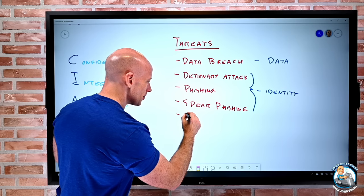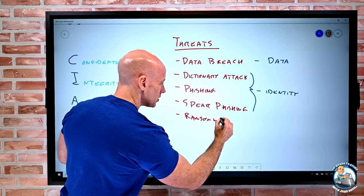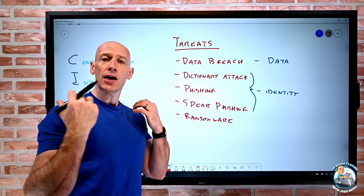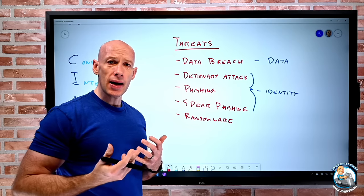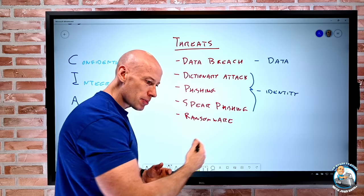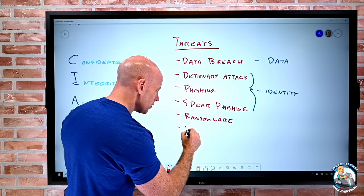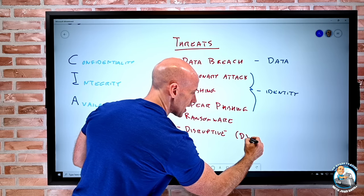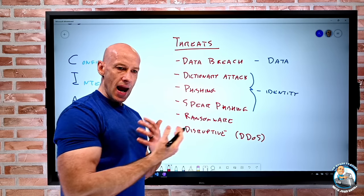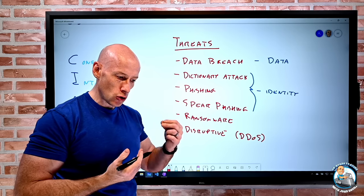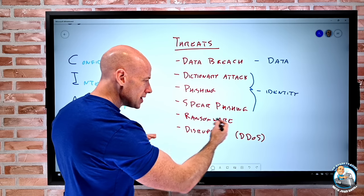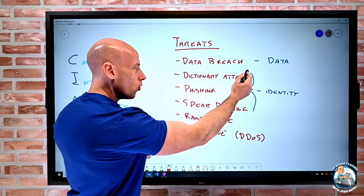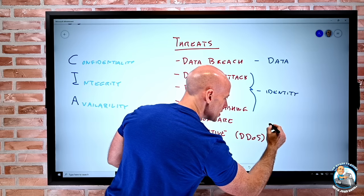Ransomware — like WannaCry — gets into the network, encrypts the data, and demands payment to unencrypt it, disrupting the business. There are also purely disruptive attacks like a distributed denial of service attack, where the attacker isn't gaining anything other than stopping the company from doing business. These all affect availability. And if identity is compromised, attackers can do a lot of damage — modify things, change controls, and access data.